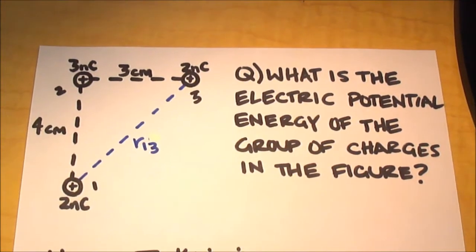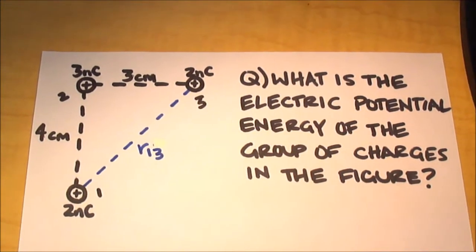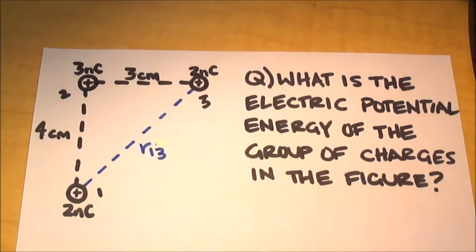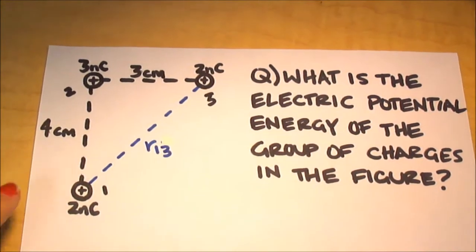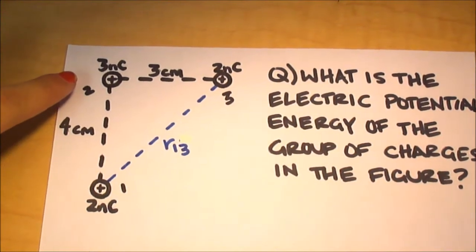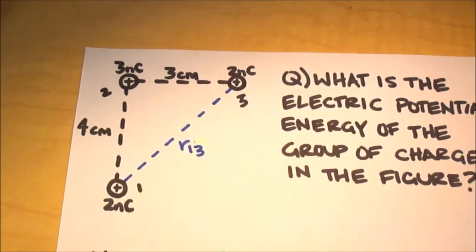Our question asks, what is the electric potential energy of the group of charges in the figure? As you can see, we have three point charges in this figure. One being the two nanocoulomb charge down here, two being the three nanocoulomb charge up here, and three being the two nanocoulomb charge over there.